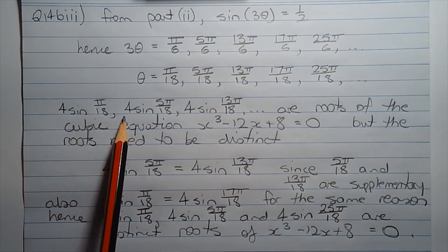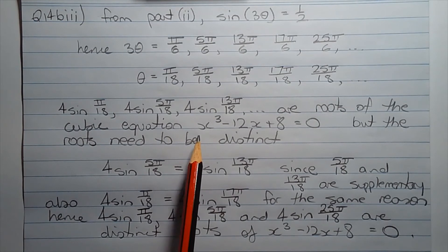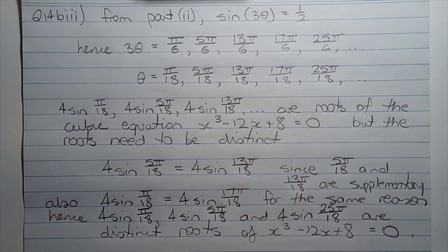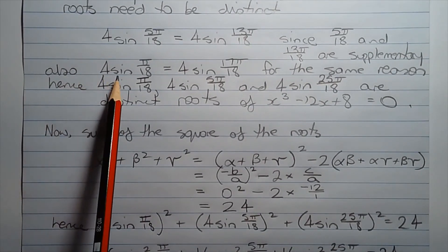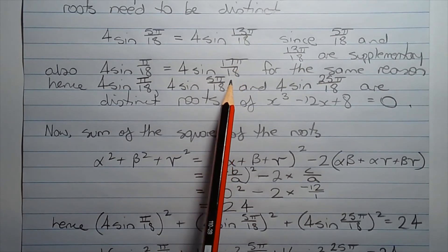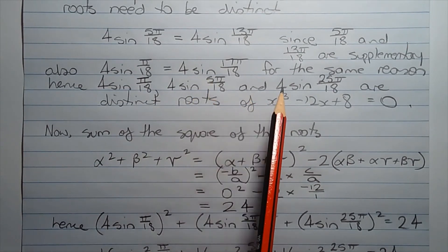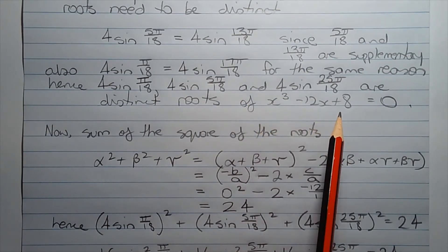Now, 4 sin pi over 18, 4 sin 5 pi over 18, 4 sin 13 pi over 18, and so on are roots of the cubic equation x cubed minus 12x plus 8 equals 0. But the roots need to be distinct. Now, 4 sin 5 pi over 18 equals 4 sin 13 pi over 18, since 5 pi over 18 and 13 pi over 18 are supplementary — one is a quadrant 1 angle and the other a quadrant 2 angle. Also, 4 sin pi over 18 equals 4 sin 17 pi over 18 for the same reason. Hence, 4 sin pi over 18, 4 sin 5 pi over 18, and 4 sin 25 pi over 18 are the distinct roots of x cubed minus 12x plus 8 equals 0.